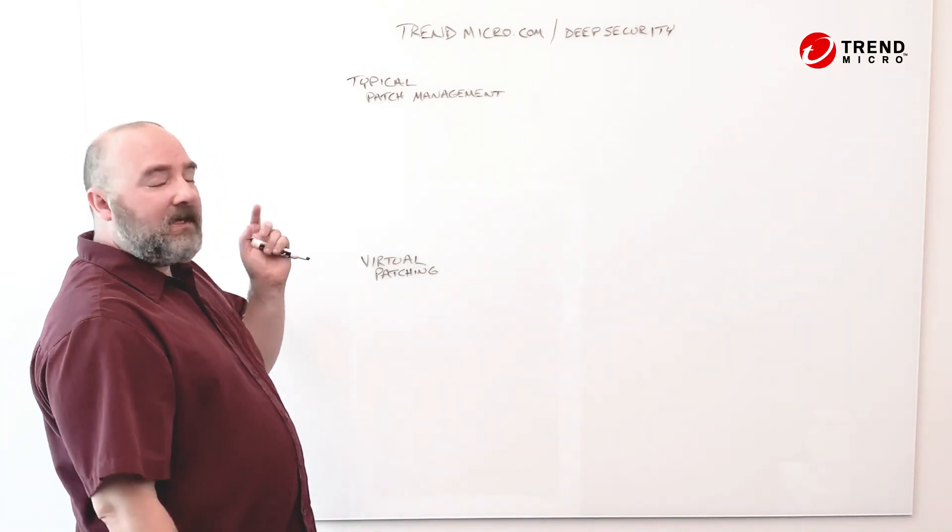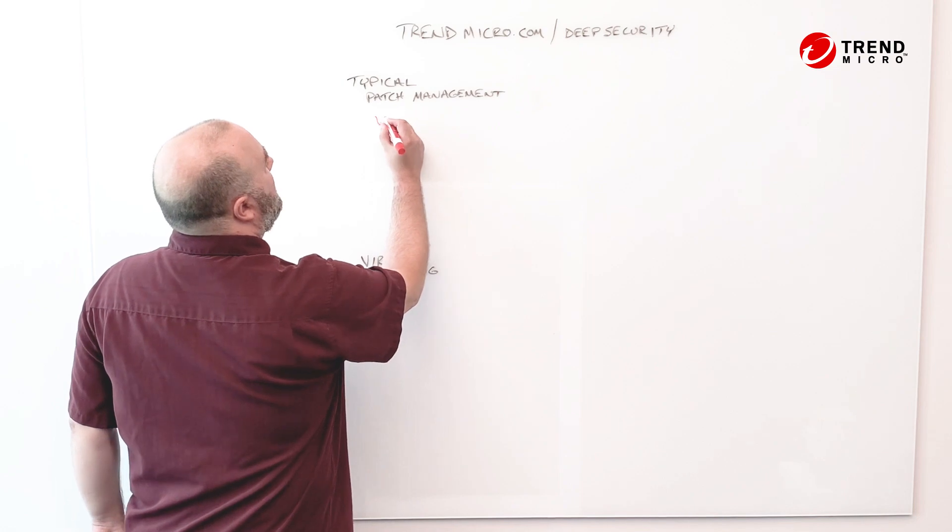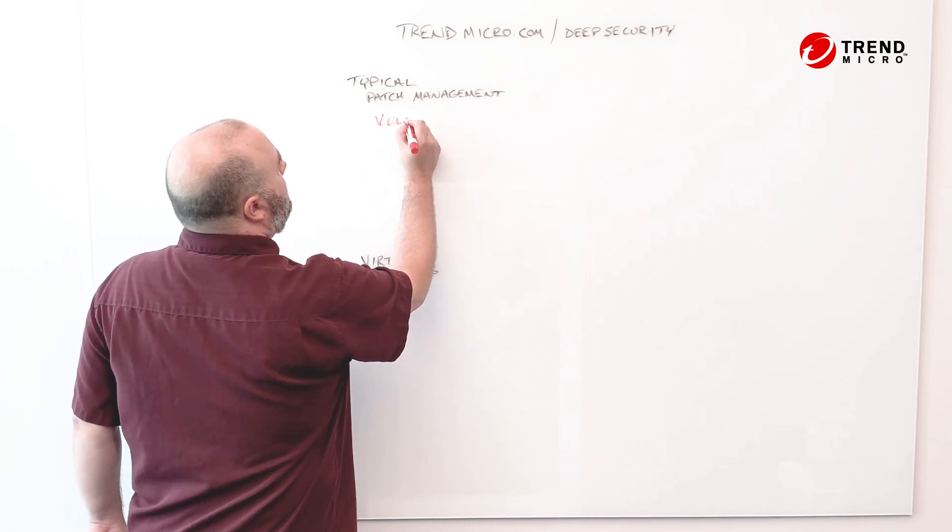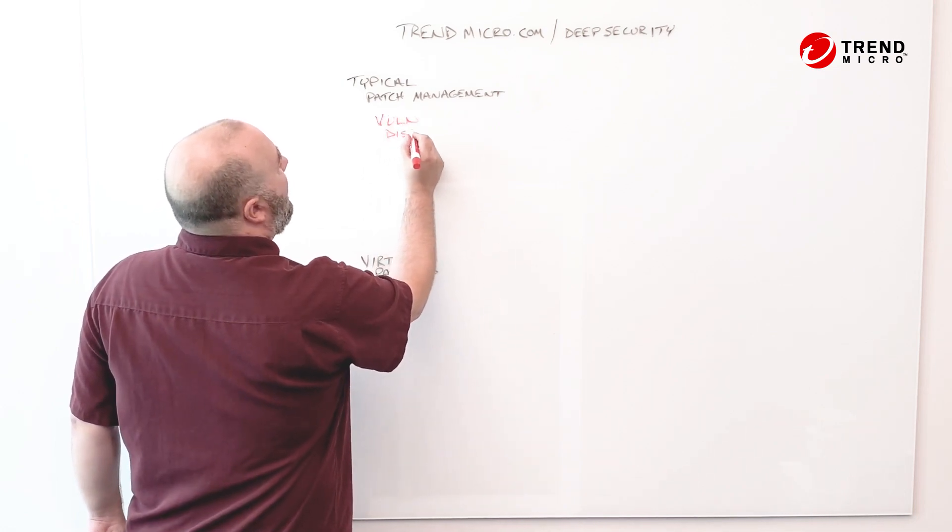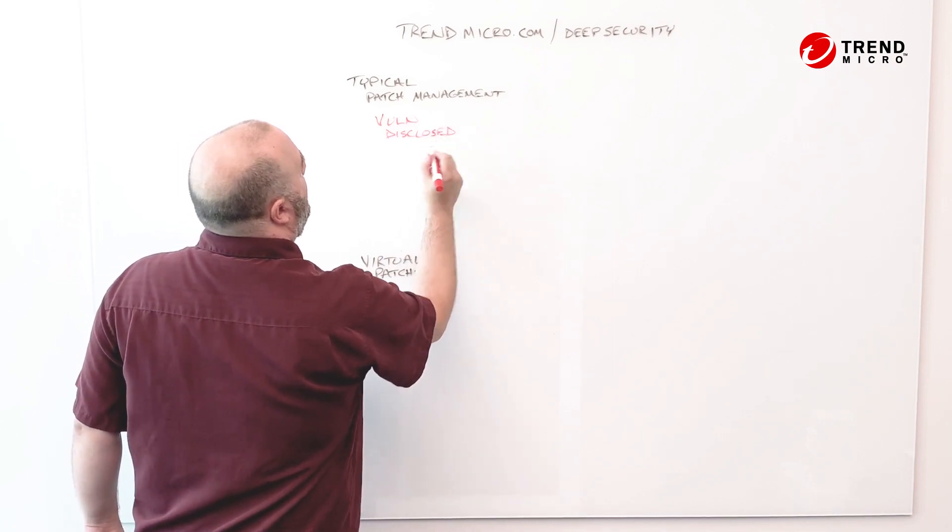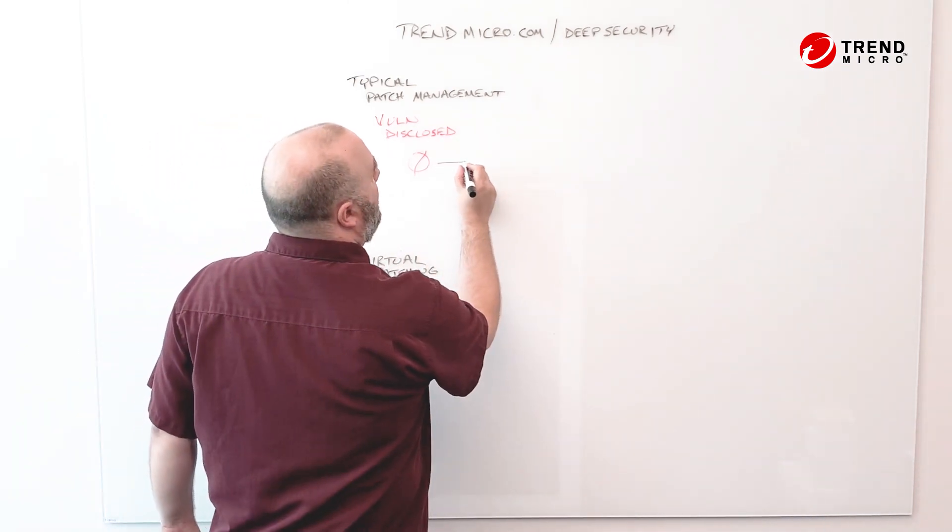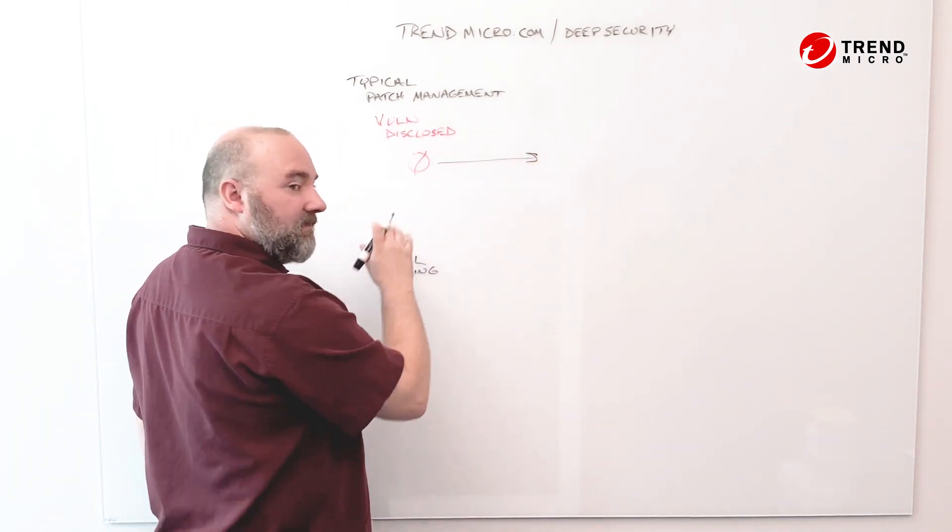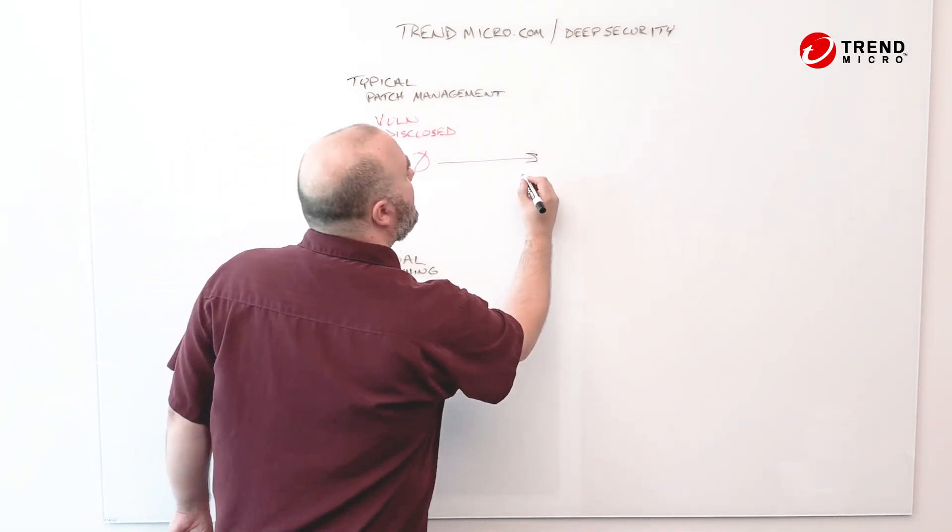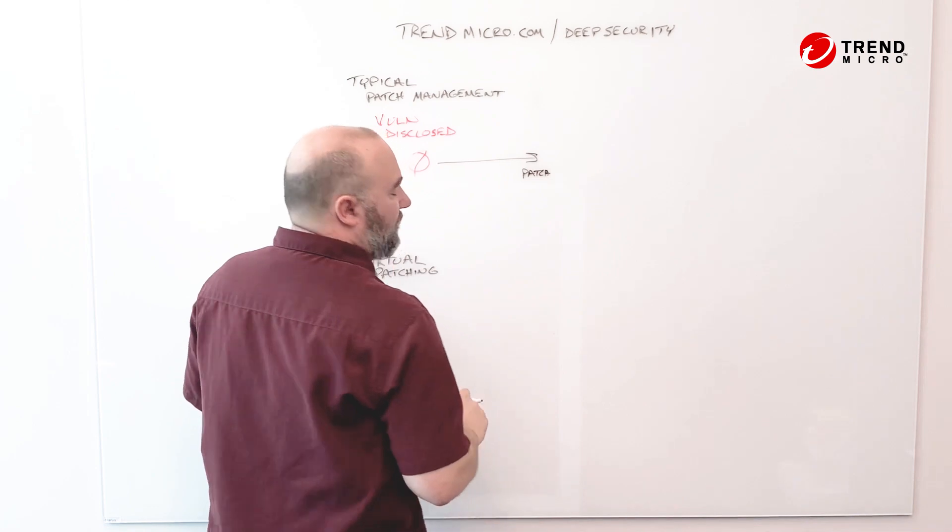So in typical patch management, there is a vulnerability that is disclosed, and we'll call that time zero. Now sometimes there is a patch available from the vendor at day zero, but oftentimes that patch becomes available sometime in the future.